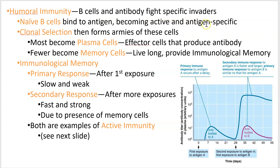Once they become active and antigen specific, they're going to make copies of themselves. As covered in an earlier slide, they're going to clonally select — make loads and loads of copies. Most of those copies become what are called plasma cells, which are the effector cells of the B cell group. These plasma cells make antibodies; they go out and pump out the antibody that's going to fight that one antigen.